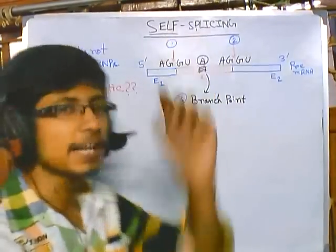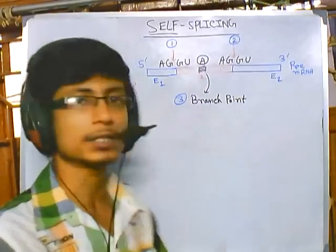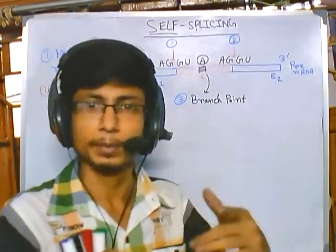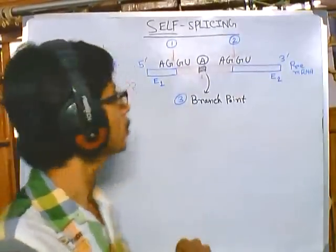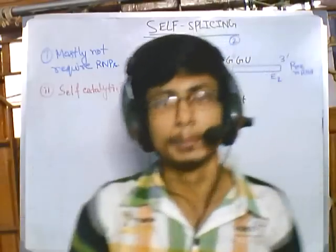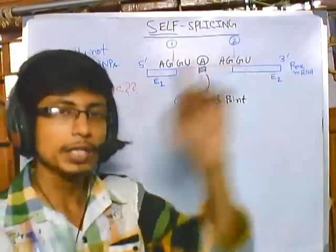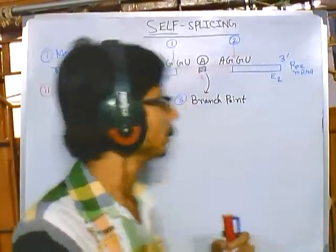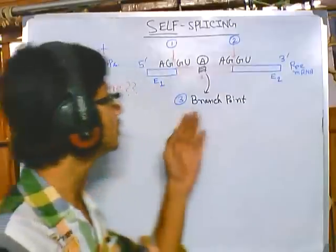Self-splicing is called 'self' because it does not require the formation of a spliceosome. The pre-mRNA can splice itself using only a few accessory proteins — needed mainly to shield the negatively charged RNA backbone — but otherwise does not require typical ribonucleoproteins. Now with these three critical regions identified, let us look at how the self-splicing machinery actually works.